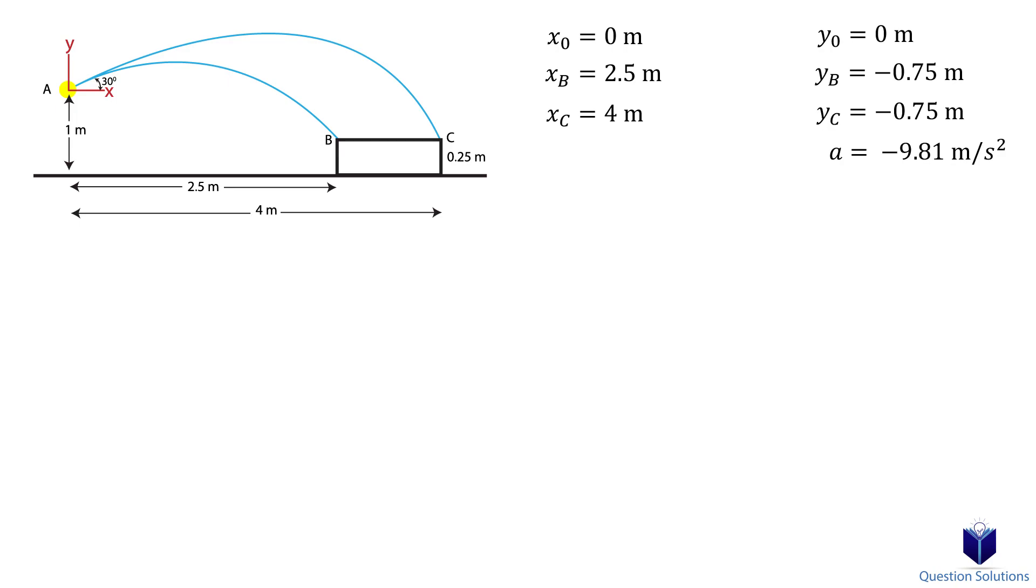Now let's think about the velocity. In the horizontal direction, we have v cos 30 degrees, and in the vertical direction, we have v sin 30 degrees.